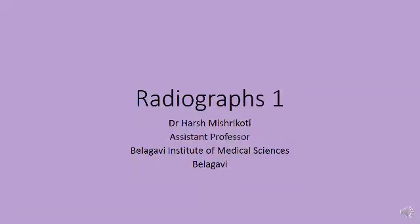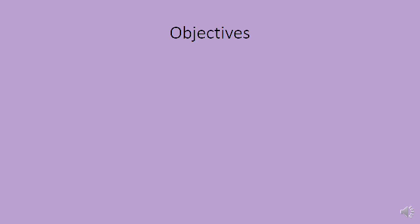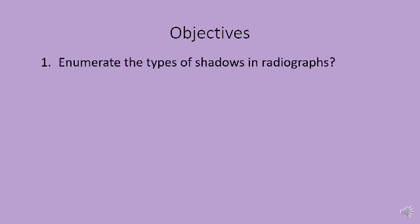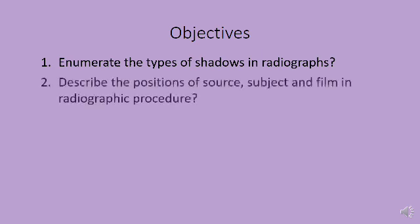Hello, dear students. In this video we shall look at basics of radiographs, specifically x-rays. For this video there are five objectives. Firstly, you will be able to enumerate the types of shadows in radiographs. Secondly, you will be able to describe the position of source, subject, and film in a radiographic procedure — we need all three in any radiography procedure.